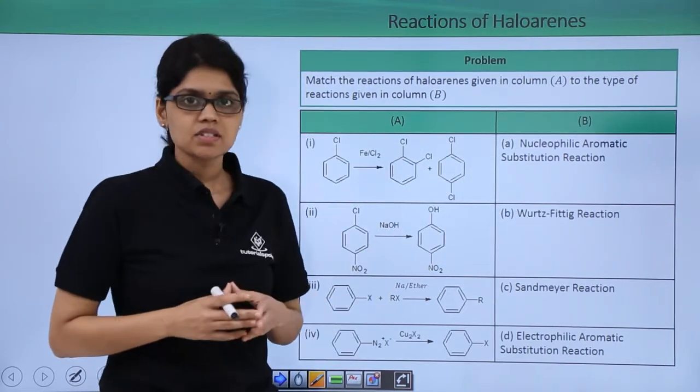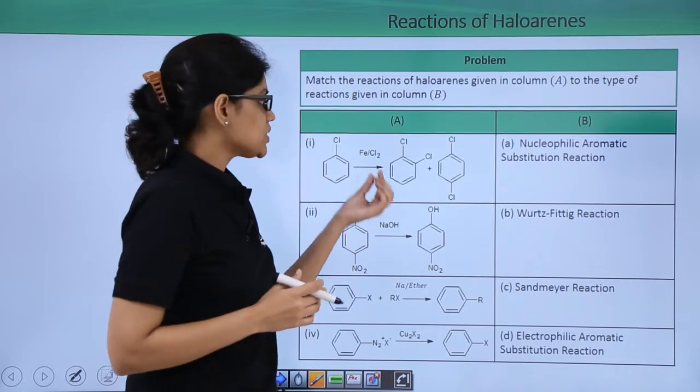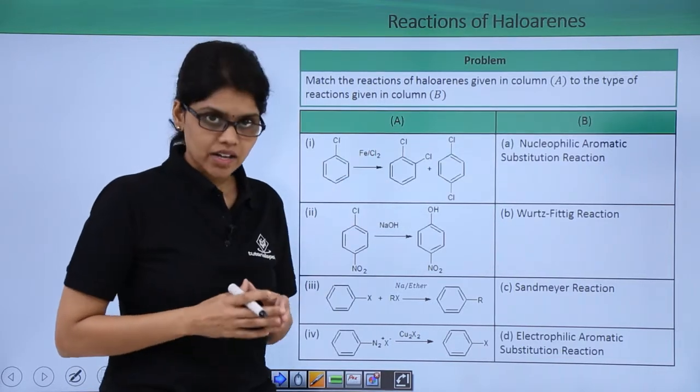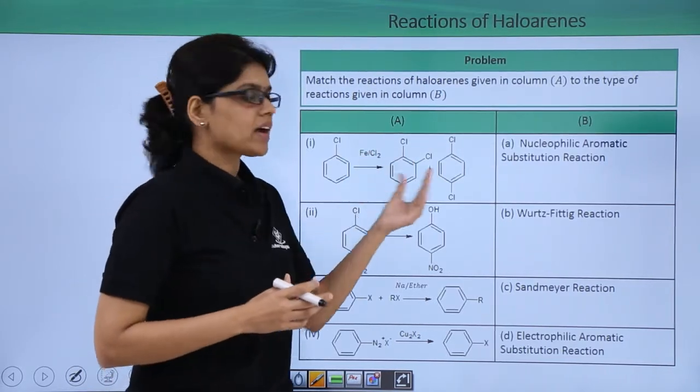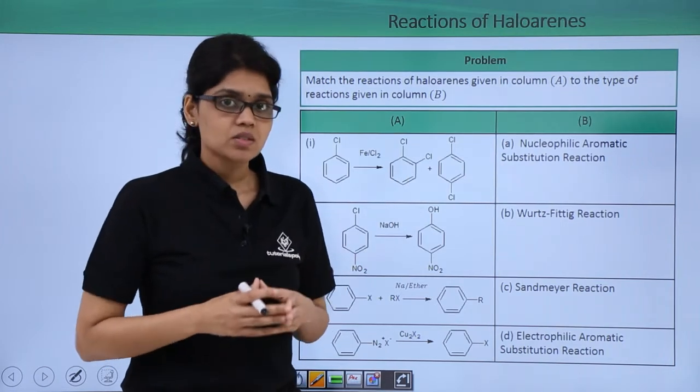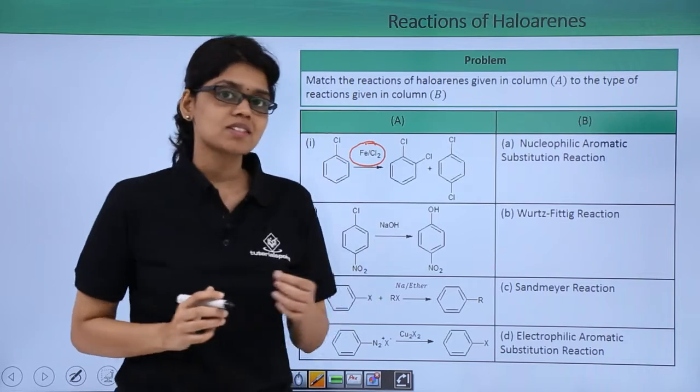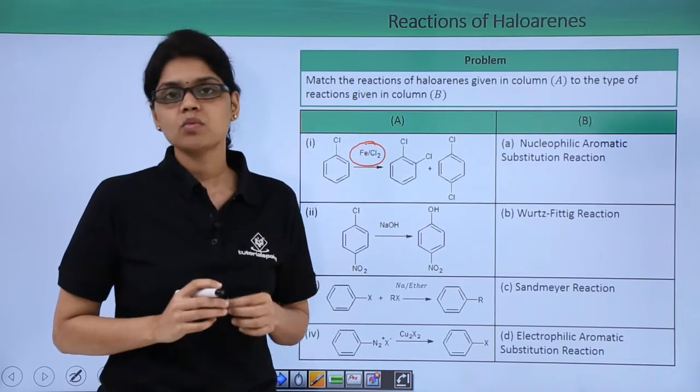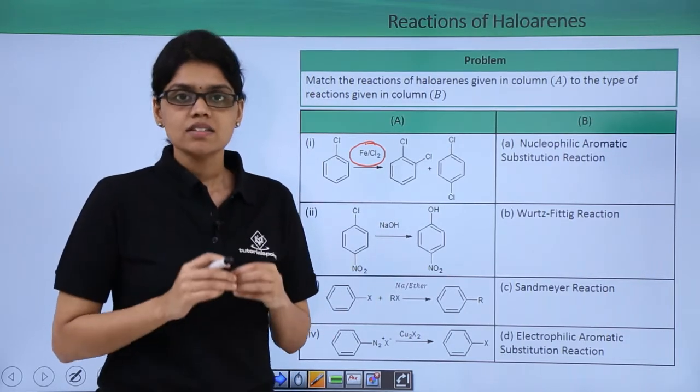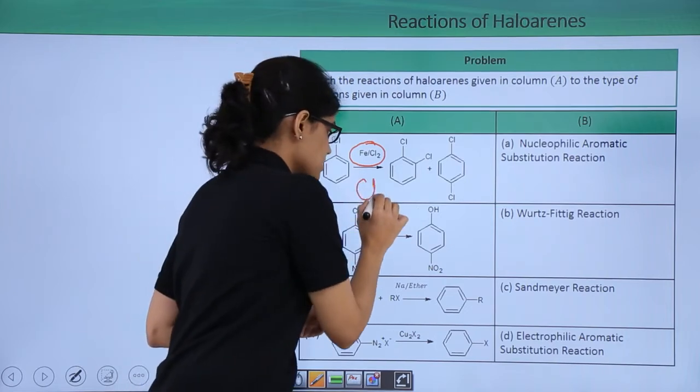Let's look at the first reaction which is chlorobenzene reacting with chlorine in the presence of Fe to give ortho and para substituted products. As you can see, if you look at the reagent here you have Fe and Cl2 such that the reactive intermediate involved in this particular reaction is nothing but Cl plus.